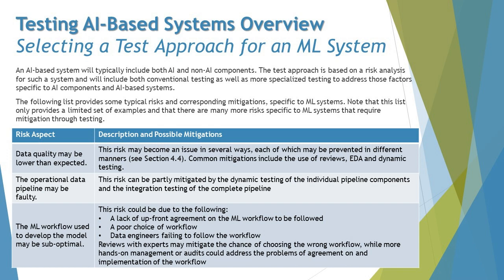The first risk aspect is that data quality may be lower than expected, which we have commonly discussed in previous chapters. This risk may become an issue in several ways, each of which may be prevented in different manners as covered in chapter 4. Common mitigations include the use of reviews, exploratory data analysis (EDA), and dynamic testing to ensure that data is appropriate and quality is up to the mark.